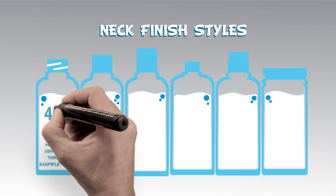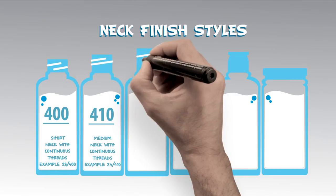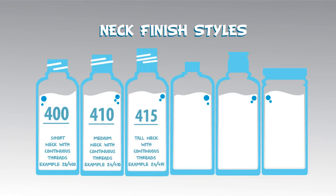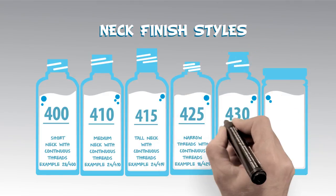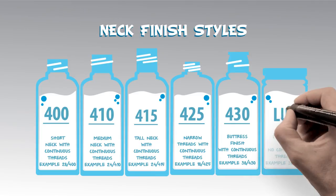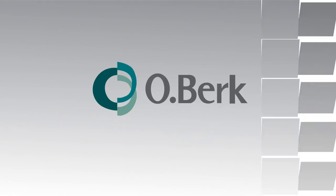As an example, if the thread passes itself only once, we can call this neck finish a 400. If it passes itself one and a half times, it's a 410 finish. A tall neck with two turns is a 415. A short neck with two turns is a 425. Thick threads are a 430, and finally a lug finish is a 2000.